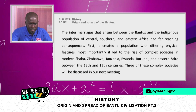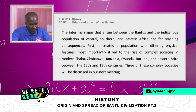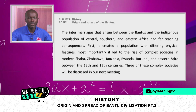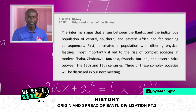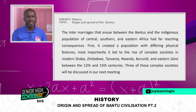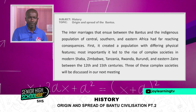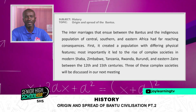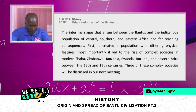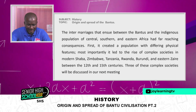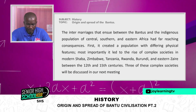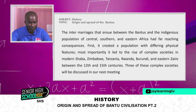The intermarriages that ensued between the Bantus and the indigenous populations of Central, Southern, and Eastern Africa had far-reaching consequences. First, it created a population with different physical features. Most importantly, it led to the rise of complex societies in modern Shaba, Zimbabwe, Tanzania, Rwanda, Burundi, and Eastern Zaire between the 12th and 15th centuries.